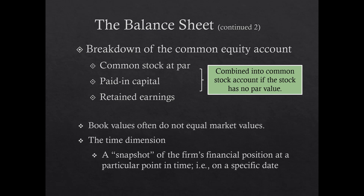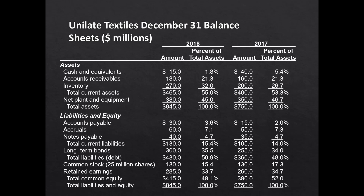The balance sheet is a snapshot of the firm at a specific date. The income statement measures the changes in the balance sheet between two dates. We'll use Unilate Textiles throughout the course — a made-up company for analysis that will also appear in tests and quizzes. Here's a December 31st balance sheet for Unilate for 2018 and 2017.